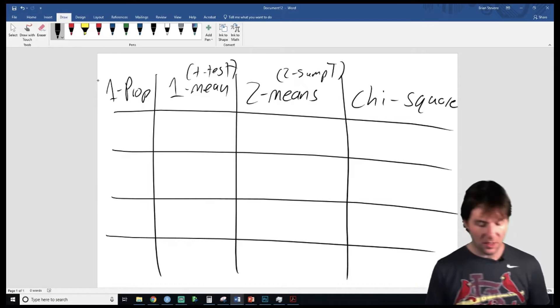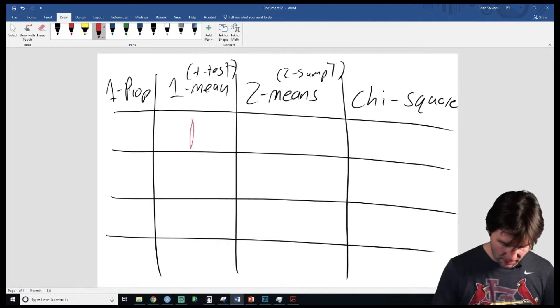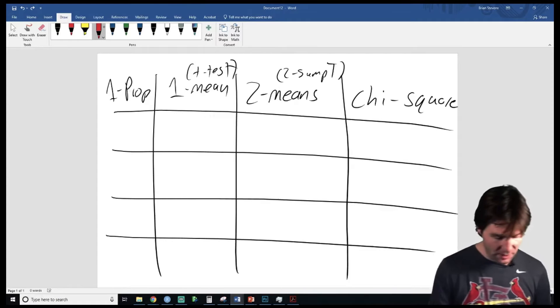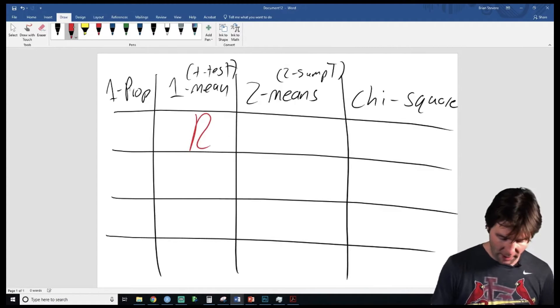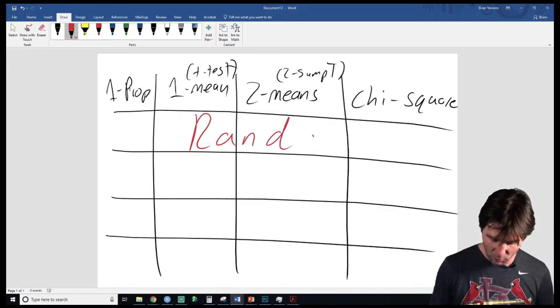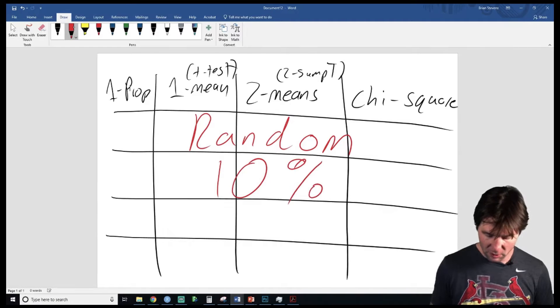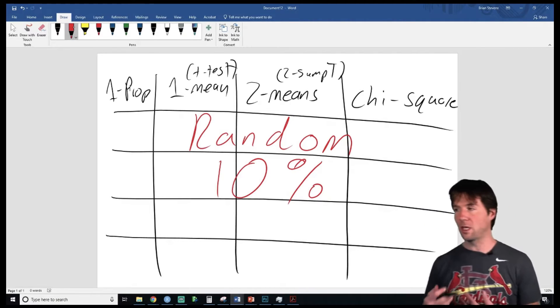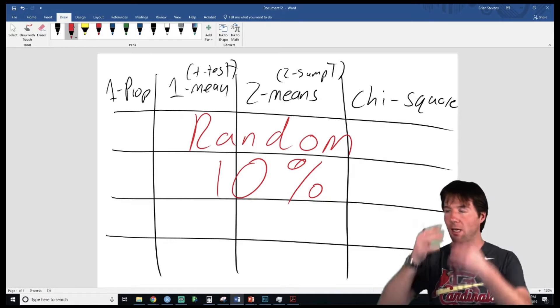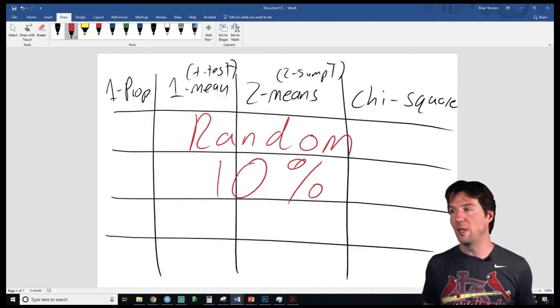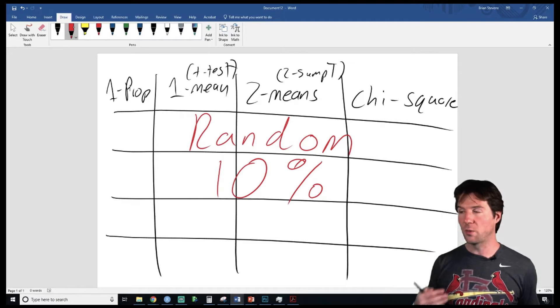When we do these conditions, I always like to say condition one is random. Let's go to the big red pen. Condition one is random - you have to randomly select. Condition two is 10%. It doesn't matter, whenever you watch any of my lectures, condition one is that we randomly select the observations. Condition two being 10% - those are things we do every time.